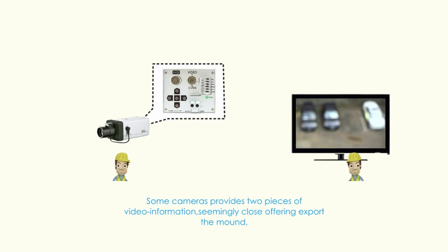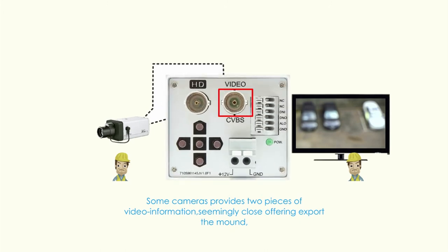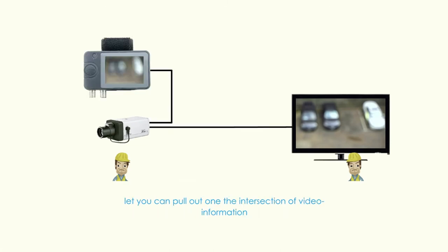Some cameras provide two pieces of video information, similarly offering a second output. You can pull out one of the video information feeds. So, can you see it clearly?